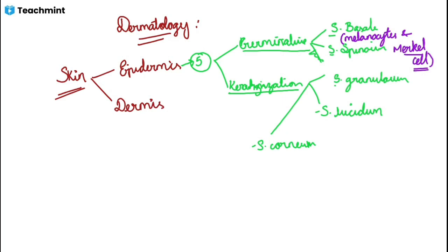Stratum spinosum is considered to be the thickest layer. In stratum spinosum we have Langerhans cells. These Langerhans cells are nothing but the tissue macrophages of the skin — just like the liver has Kupffer cells, similarly in the skin we have Langerhans cells.